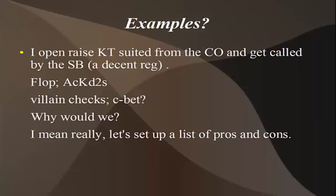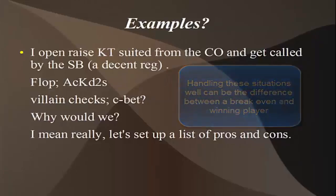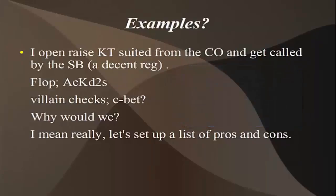For example, let's say I open raise king-ten suited from the cutoff, we're playing six-max, and I get called by the player in the small blind who's been playing pretty decently. The flop comes out ace, king, two, rainbow, and villain checks to us. What should we do? Do we c-bet? And if we c-bet, why are we c-betting? I'm literally asking you — if you have to, pause the video, take a second, think about this. Why are we betting?